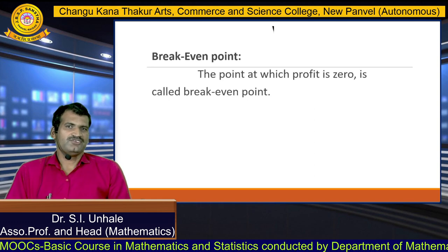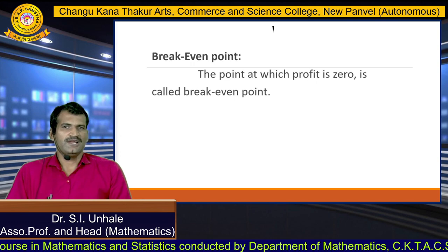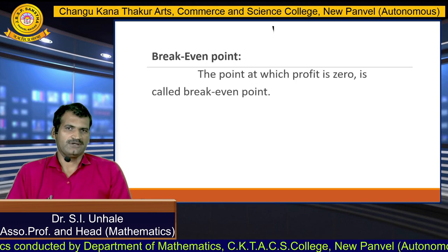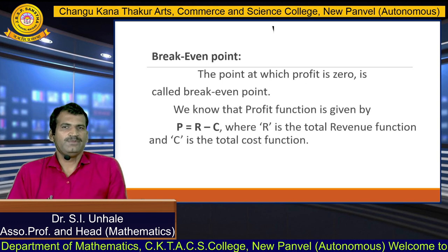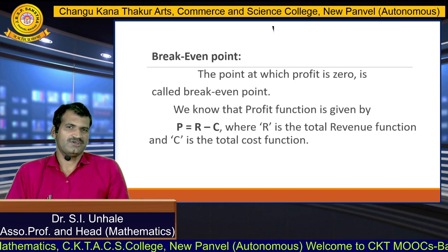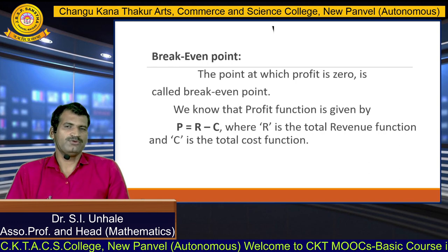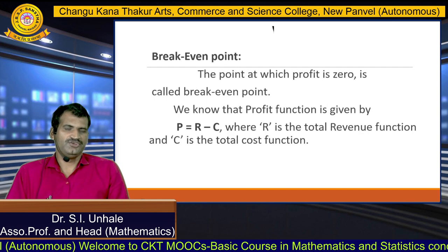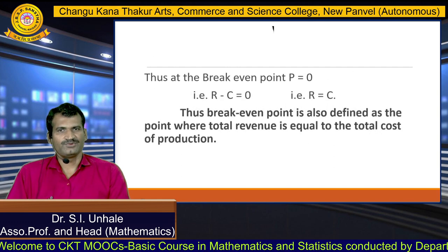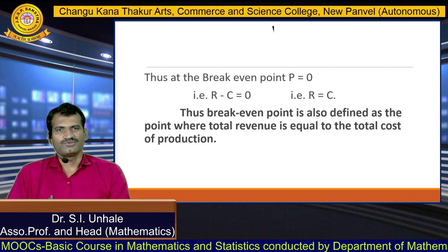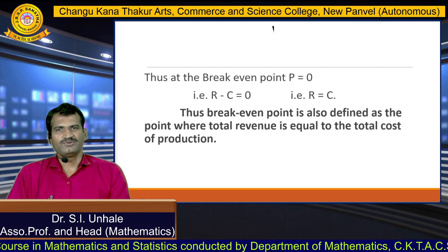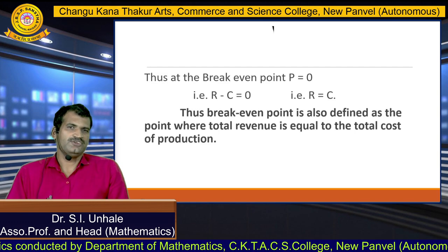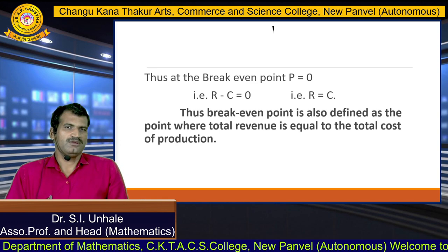The next concept from economics is the breakeven point. As you may be familiar from 11th and 12th standard, the point at which total profit is 0 is called the breakeven point. We define it as: since the total profit function is P equals R minus C, where R is the total revenue function and C is the total cost function, the breakeven point is where P equals 0, that is R minus C equals 0. Simplifying, we get R equals C. In other words, the breakeven point is the point where total revenue equals total cost of production.